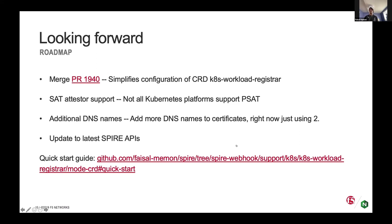We're looking to add more DNS names to certificates — right now we're just adding the name of the pod and the name of the service associated with the pod, and we'll fill that in with a full set of DNS names available. We're also looking into updating to use the latest set of Spire APIs released with 0.11.0. We'll send out the slide decks afterward with the link. I'd love for you guys to try it out and let me know what you think — any feedback is definitely welcomed.